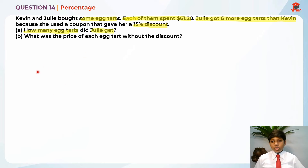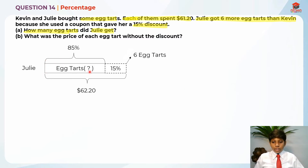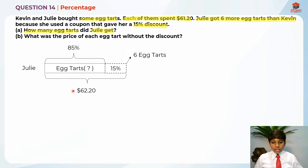So first I'm going to draw a model to represent Julie. She's actually supposed to use her whole money which is $61.20, but then she got a 15% discount. So she only spent 85% of that. Since she got a 15% discount, she had some more money left, and with that money she used it to buy 6 more egg tarts. So basically, we know that 15% equals 6 egg tarts.